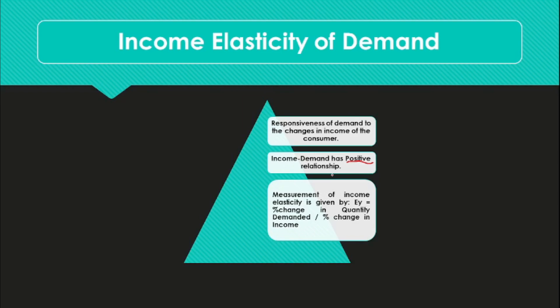The measurement of income elasticity of demand is given by a formula: percentage change in the quantity demanded for commodity X, divided by percentage change in income. If you remember the formula for price elasticity of demand, the formula for income elasticity is also the same — only in place of the price of the commodity, we have substituted income. The proportionate change in the quantity demanded divided by the proportionate change in income gives the coefficient of income elasticity.